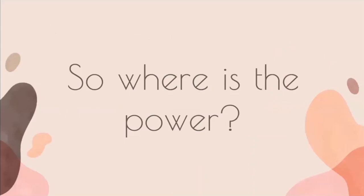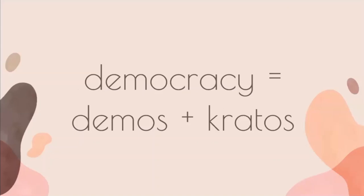The word democracy is built up of demos — people — and kratos — power. The power belongs to the people. The difference between a democracy and an autocracy is what comes before kratos: demos versus auto, the people versus the self.